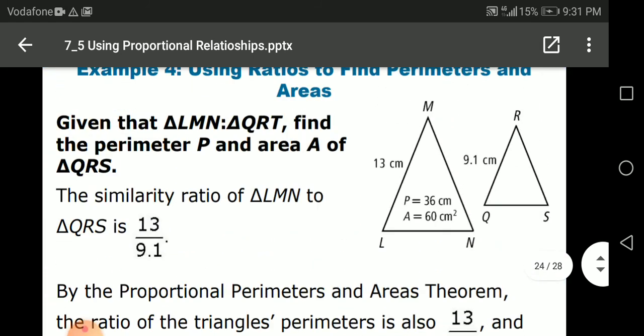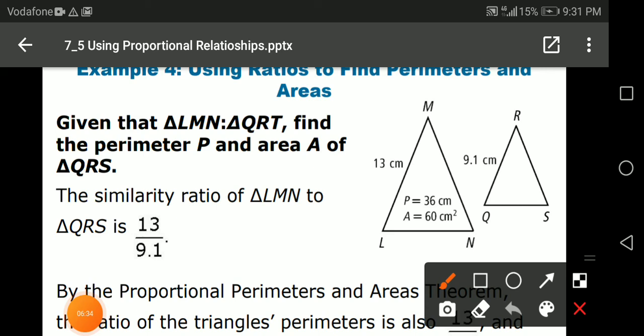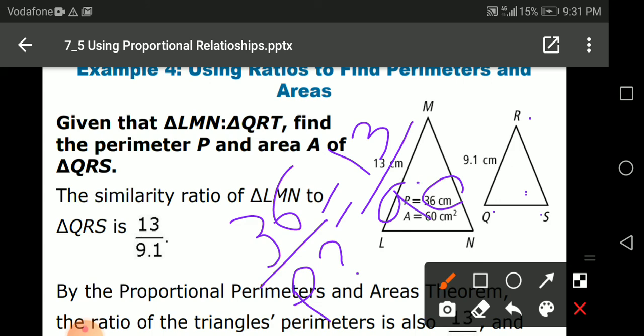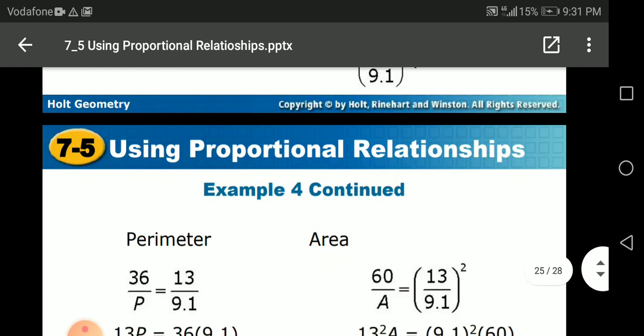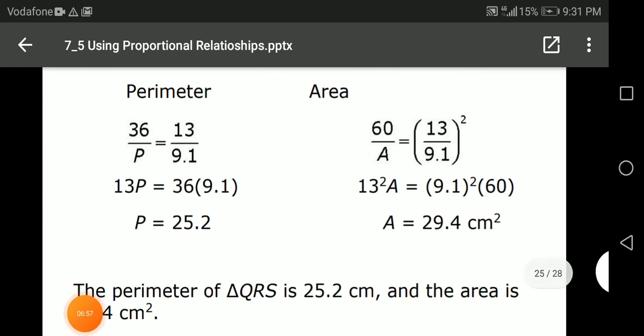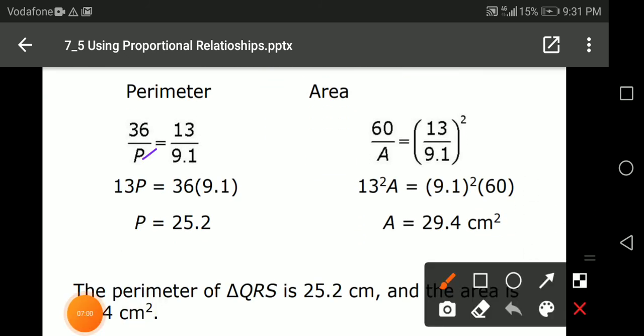I will take here the perimeter of triangle LMN, 36, over the perimeter of triangle QRS equals to the ratio that I know, 13 over 9.1. Cross multiplication, 13 times P equals 36 times 9.1. So P will be 25.2.